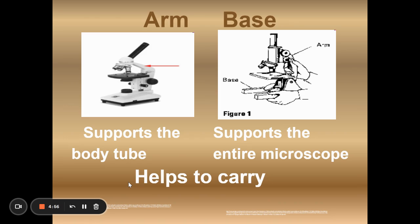Now the arm and the base are structural parts. They're supported parts of the microscope. The arm supports the upper portions of the microscope, the body tube. And the base supports the entire microscope.